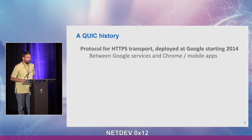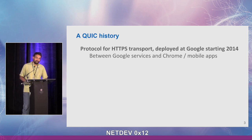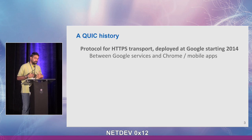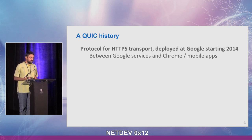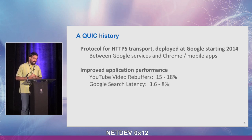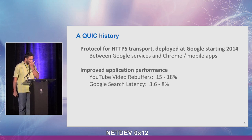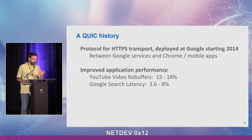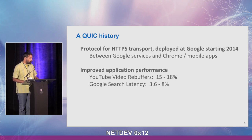QUIC was developed as an HTTPS transport at Google, and it started deployment in 2014. The deployment was between all Google services and Chrome as the client, and also mobile apps that Google shipped, such as Google Search app, YouTube app, and so on. The deployment started in 2014 at a slow burn, and we saw a fair amount of improved application performance. YouTube video rebuffers went down by 15% to 18% with QUIC over TLS and TCP. Google Search latency went down by 3.6% to 8%.